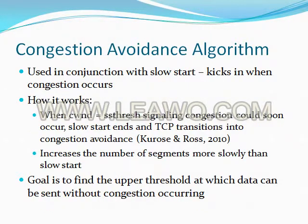The next algorithm is the congestion avoidance algorithm, used in conjunction with the slow start algorithm. It kicks in when congestion occurs. When the congestion window equals the slow start threshold — signaling that congestion could soon occur — slow start ends and TCP transitions into congestion avoidance. It increases the number of segments more slowly than slow start, and its goal is to find the upper threshold at which data can be sent without congestion occurring.